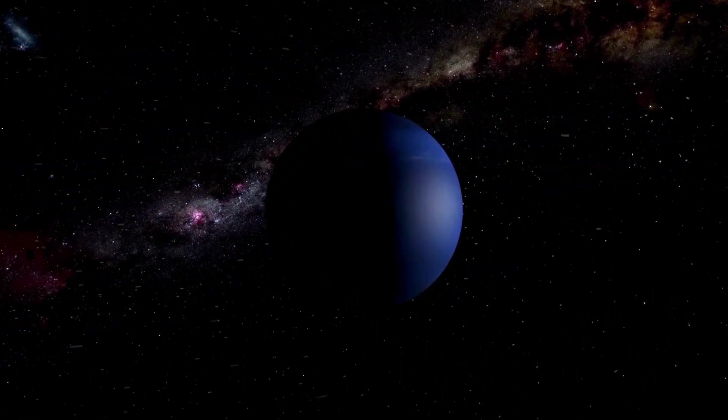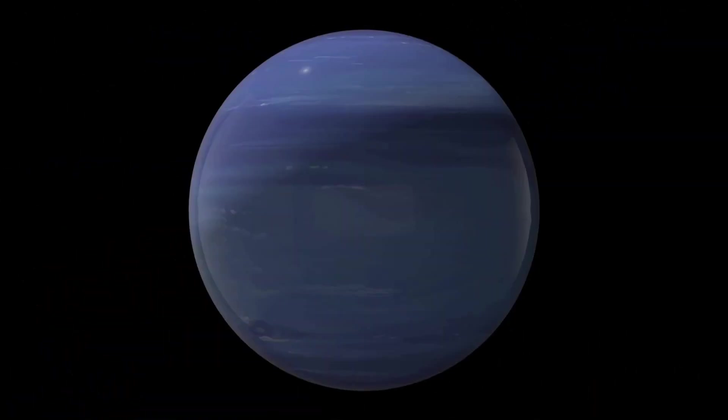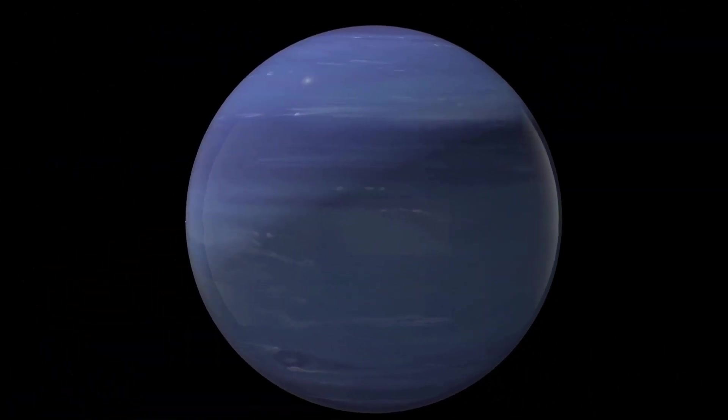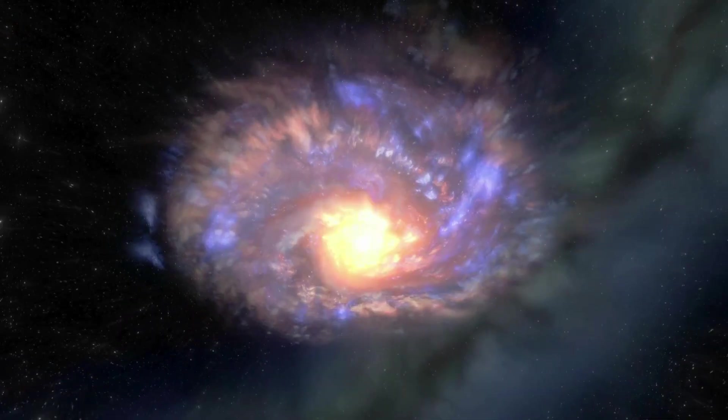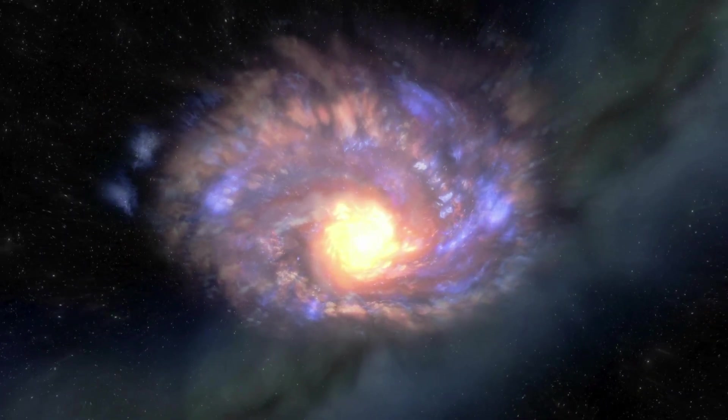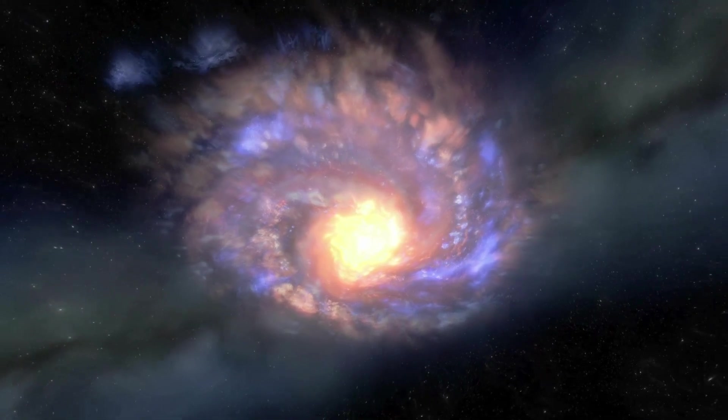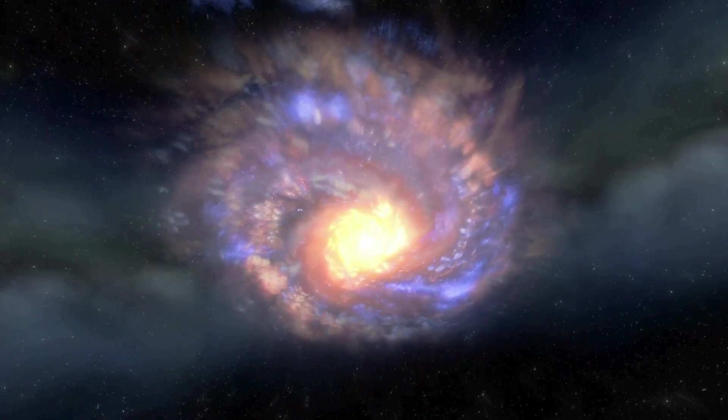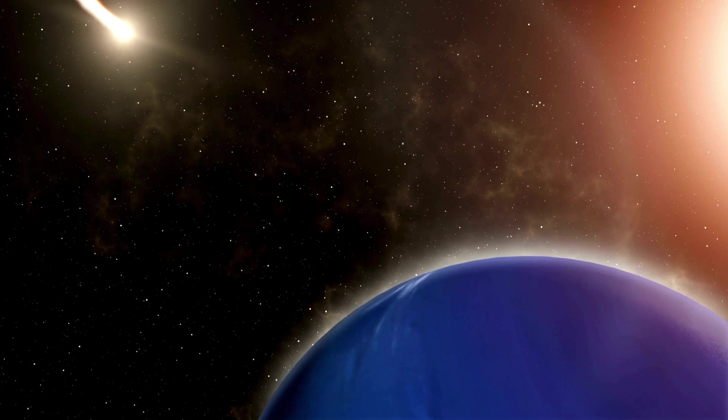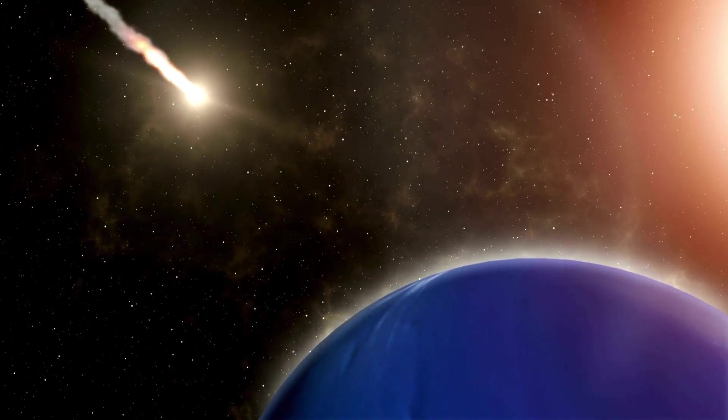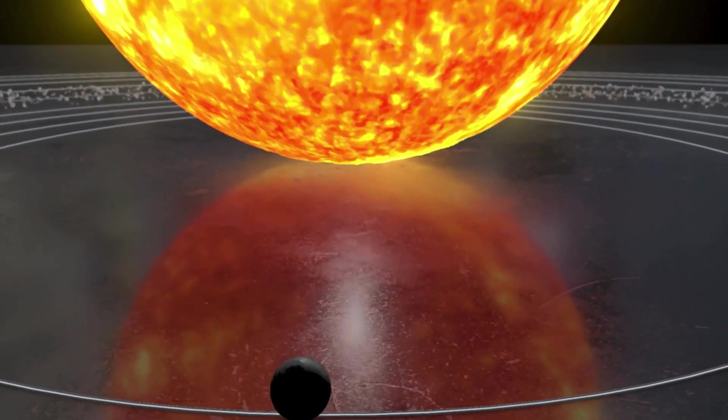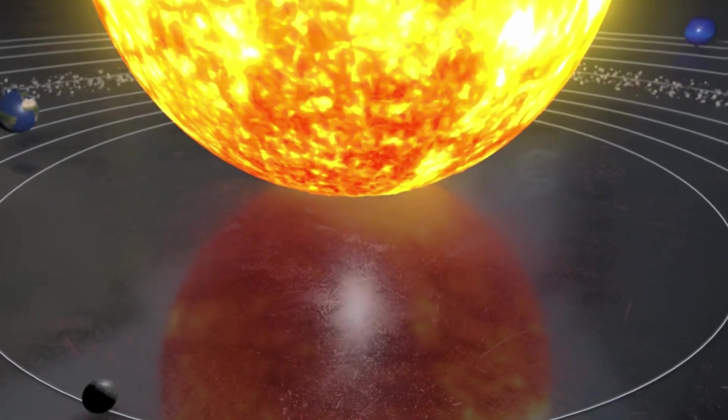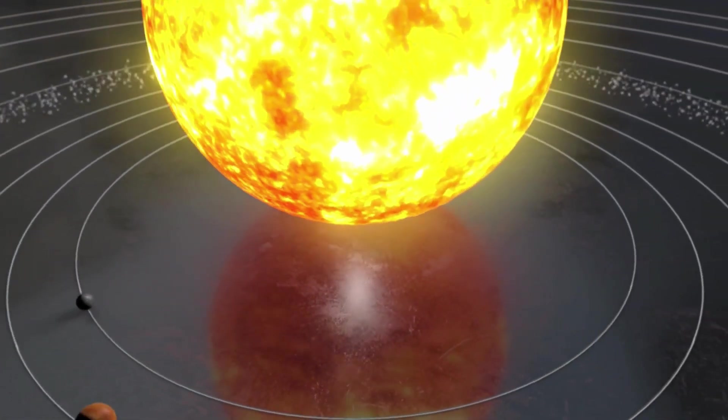Without these stabilizing forces, the solar system would be much more chaotic, with planets potentially colliding or being ejected from their orbits, triggering catastrophic consequences across the solar system. The possibility of Pluto colliding with Neptune in the future highlights the complexity of celestial mechanics and the importance of studying the stability of orbits. By understanding these intricate dynamics, we gain a better understanding of how the solar system works, the role of gravitational forces, and the behavior of distant objects. Even though Pluto's orbit may appear chaotic at first glance, it is a testament to the delicate balance of forces that keep it in place.